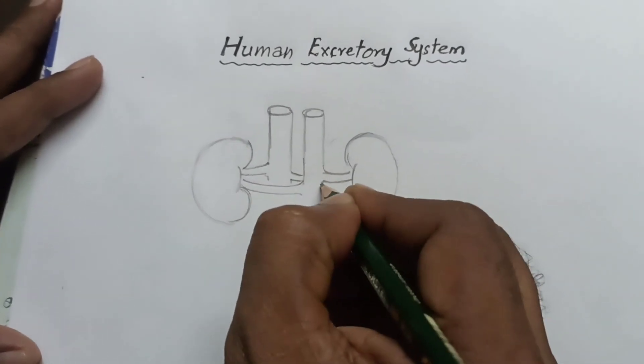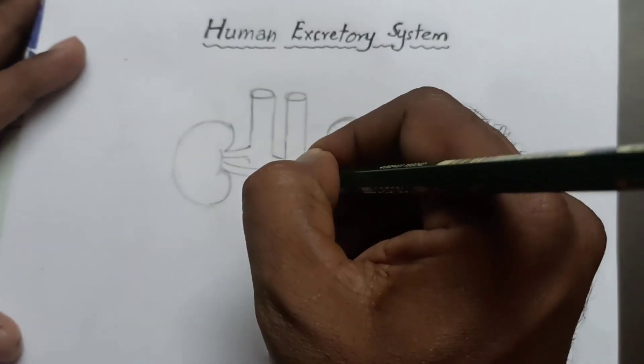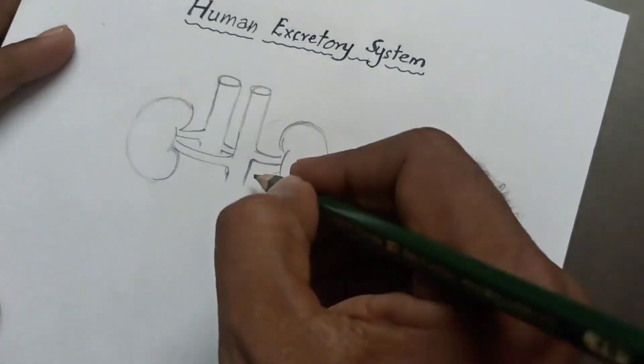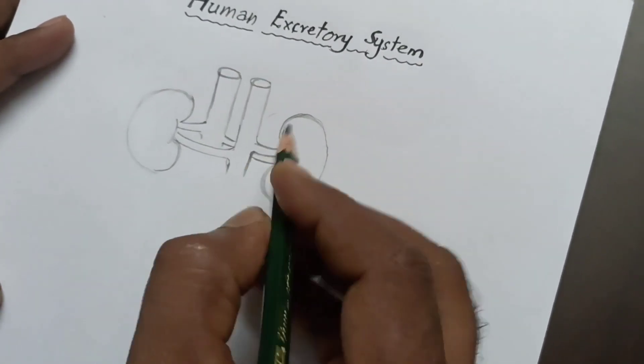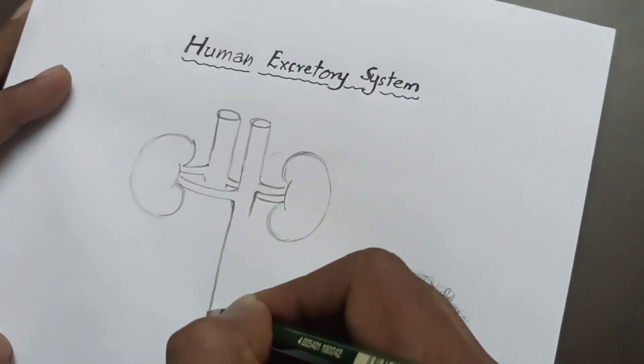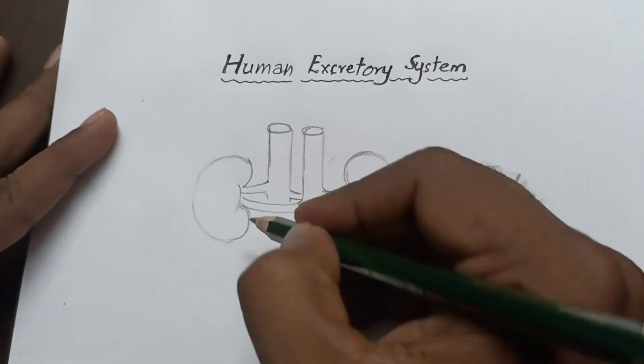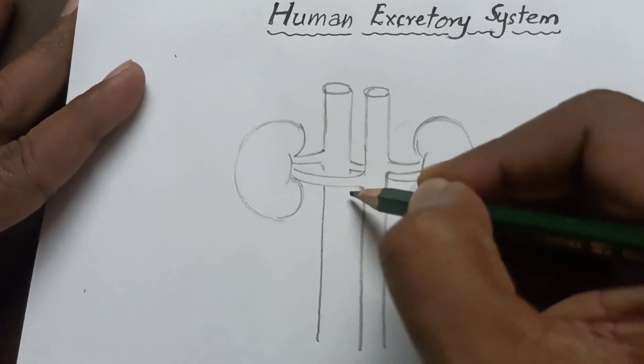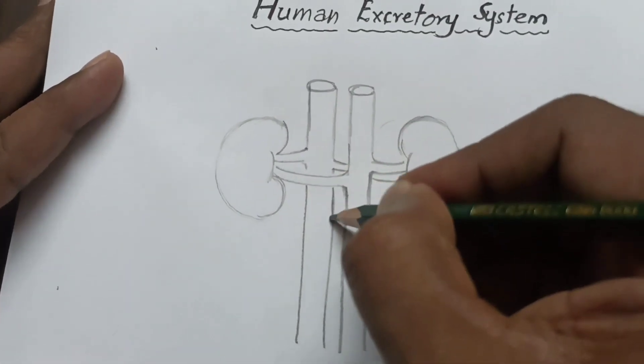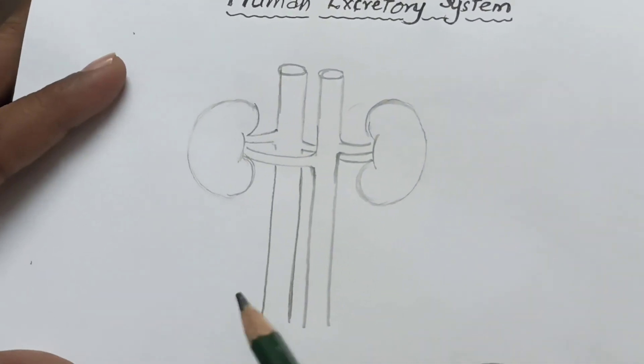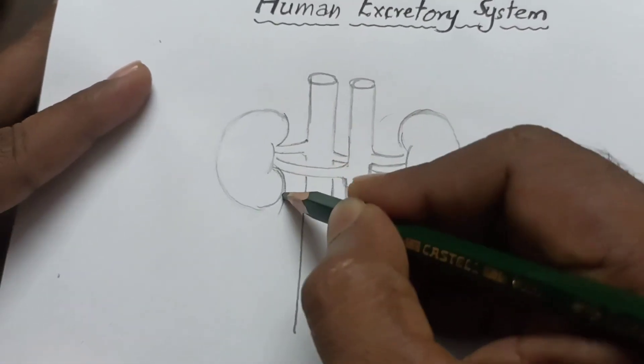You draw like this. From here you donate these lines. Good. You draw like this, stop here.